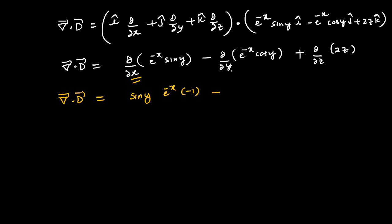Then plus 2 as it is, because differentiation of z with respect to z is 1. Divergence of D turns out to be minus e^-x sin y plus e^-x sin y plus 2. If we look at these terms, they are canceling each other. We can write divergence is 2.